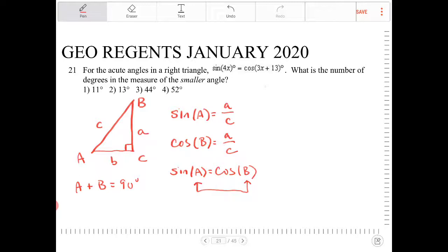So if I take 4x and 3x plus 13, remember A plus B is equal to 90. Add them together, they should equal 90.